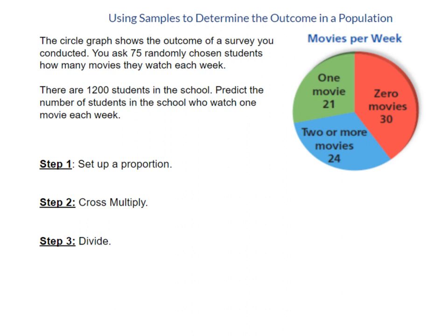You asked 75 randomly chosen students how many movies they watch each week. So based on this circle graph, this is the outcome of those 75 students. The next part says there are 1200 students in the school. So this would be like the population of the school. Predict the number of students in the school who watch one movie each week.